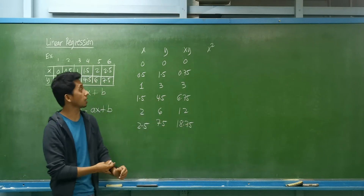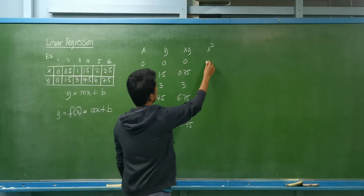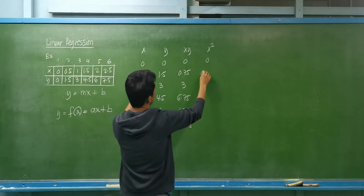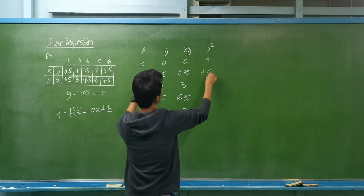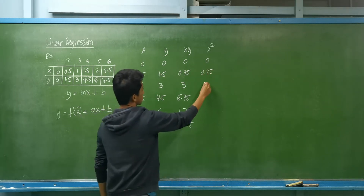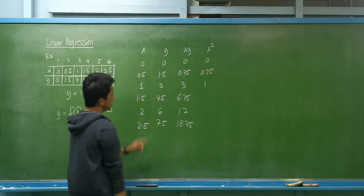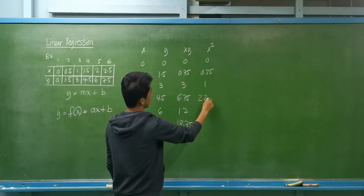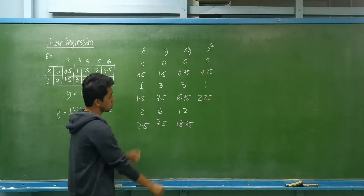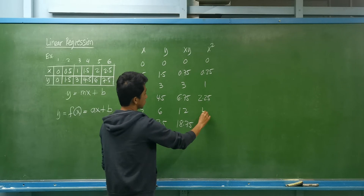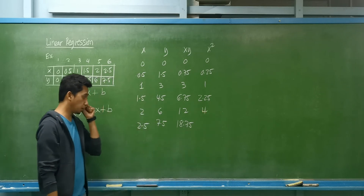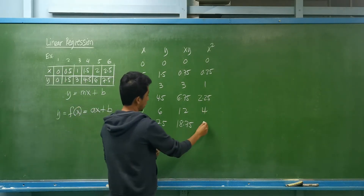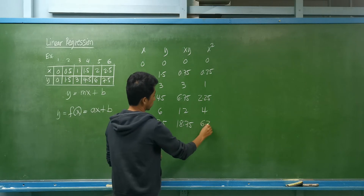For the last column, we need the values of x squared: 0² = 0; 0.5² = 0.25; 1² = 1; 1.5² = 2.25; 2² = 4; and 2.5² = 6.25.